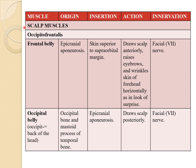Coming to scalp muscles, the first one is the occipitofrontalis, divided into the frontal belly and the occipital belly. The frontal belly originates at the epicranial aponeurosis, whereas the occipital belly originates at the occipital bone and mastoid process of the temporal bone. The frontal belly inserts at the skin superior to the supraorbital margin, whereas the occipital belly inserts at the epicranial aponeurosis.